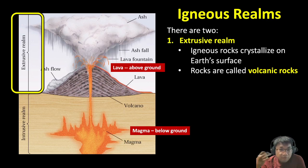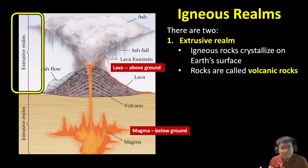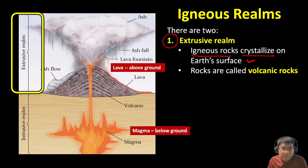Since lava is above the ground and magma is below, we can subdivide igneous activity into two realms. The first one is called the extrusive realm. Extrusive realms involve igneous rocks that crystallize on the earth's surface.